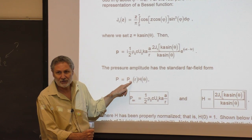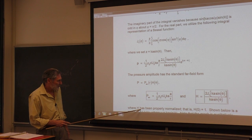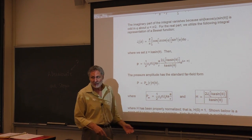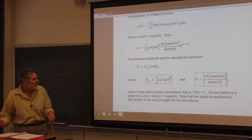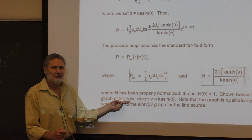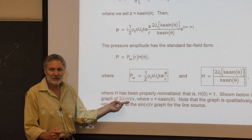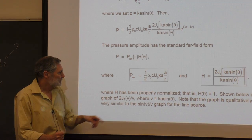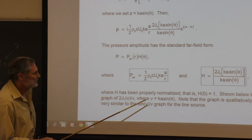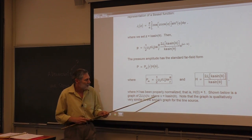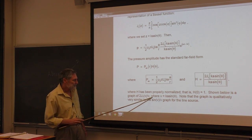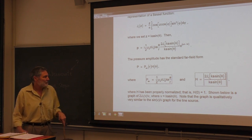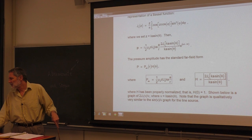The limit as V goes to zero — where V equals k*a*sin(theta) — gives H equal to 1, so H is properly normalized. What does this look like? It looks a lot like the line source. As you look in the far field at different angles, it's qualitatively a damped sinusoid, which is what Bessel functions are — you can think of them as a sinusoid whose amplitude falls off with distance. You know this from modes on a circular membrane from last quarter.